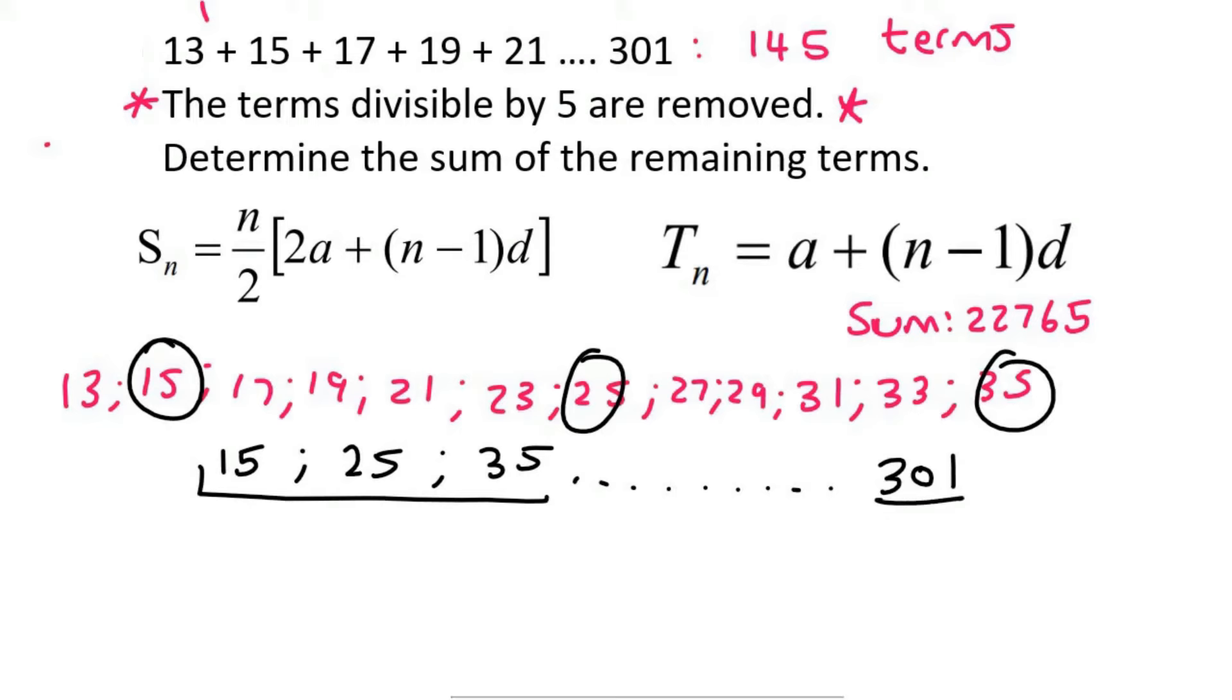But what we can do is we can try to imagine what the last term would be in this sequence that is divisible by 5. So we can work backwards. This would be 299, 297, and 295. That is divisible by 5. So that will be the last term in this pattern.